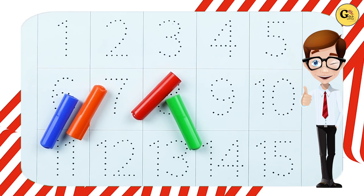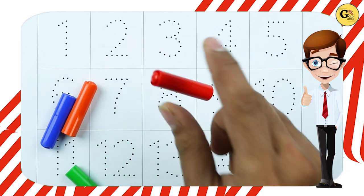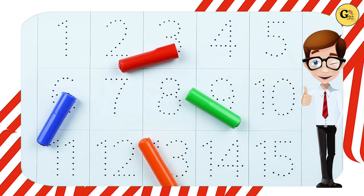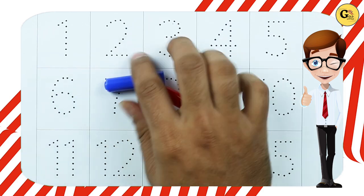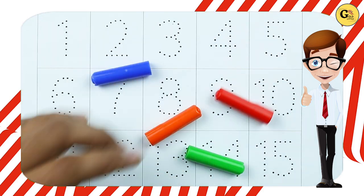Hello friends, today we will learn numbers 1 to 15 with some colors: green color, red color, orange color, blue color. Let's start.